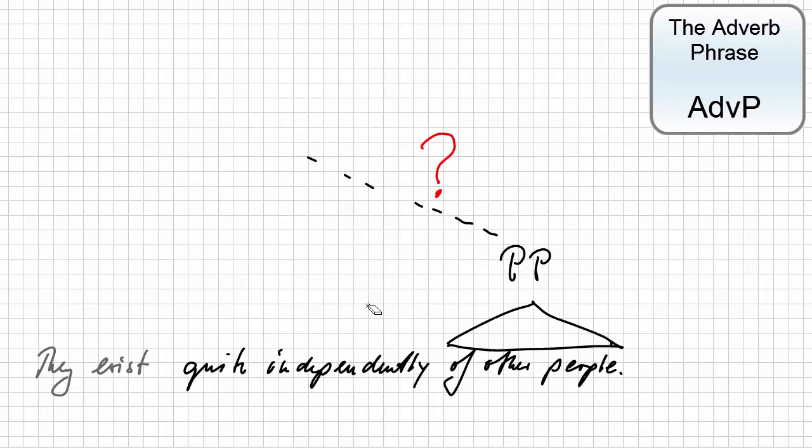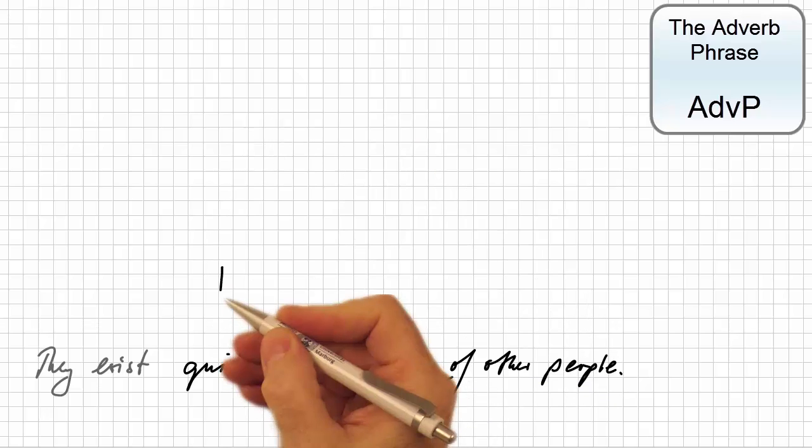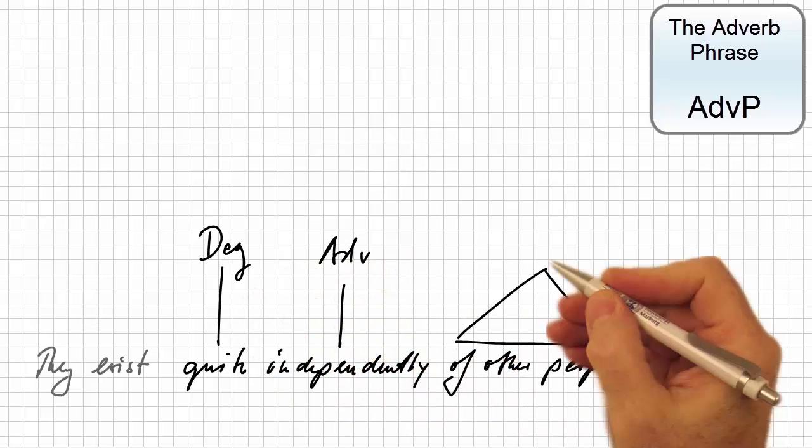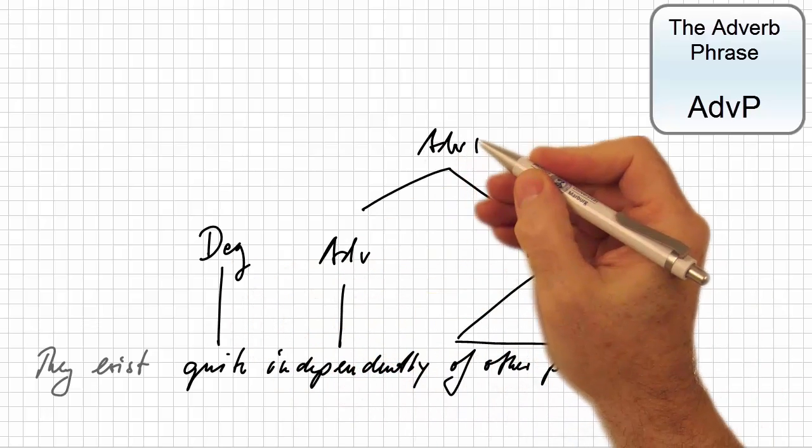In other words, we have to redraw the tree. Here is the categorical analysis again, and now the expanded phrasal analysis.